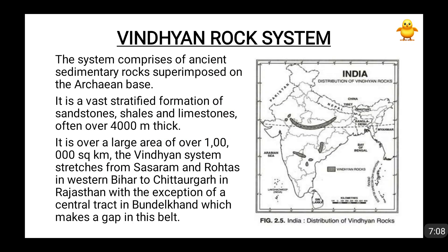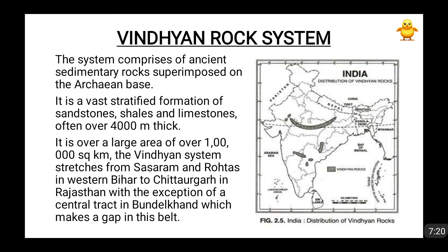After the Kudappa system in age comes the Vindhyan rock system. This system consists of ancient sedimentary rocks superimposed on the Archean base. Weathering was continuing, so old rocks like Archean, Dharwar, and Kudappa were getting weathered and new sedimentary rocks were forming on the old Archean base. These Vindhyan rocks are stratified formations; sometimes their thickness is very high — they become 4,000 meters thick, spread over an area of around 1 lakh square kilometers.